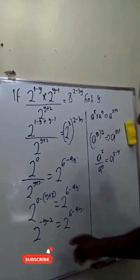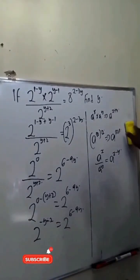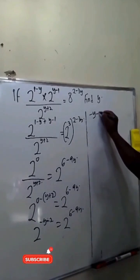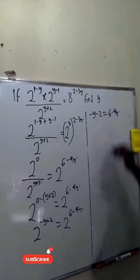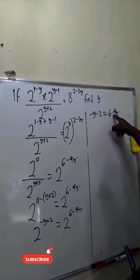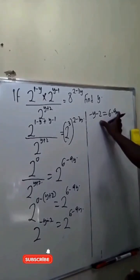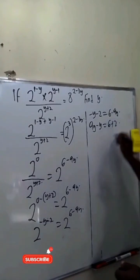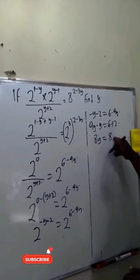Since we have the same base on both sides, the powers must be equal. This implies minus y minus 2 equals 6 minus 9y. Collecting like terms, minus y moves to one side and minus 2 moves to the other, giving us 9y minus y equals 6 plus 2, so 8y equals 8.